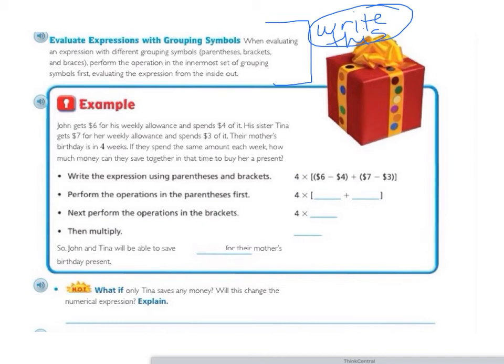We write the expression using parentheses and brackets. This is John's money on the left—he has $6 minus $4. And then Tina's money is on the right. This is John's money, and this is Tina's money. She has $7, but she spends $3 of it. And they have four weeks to save, so it's four times all their savings.